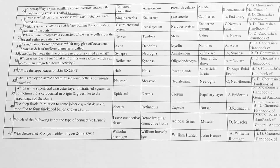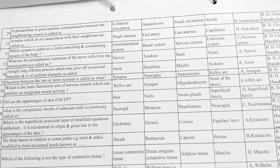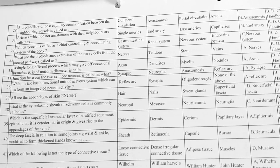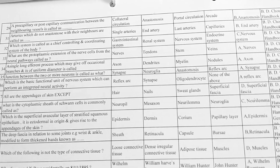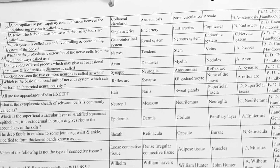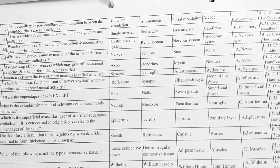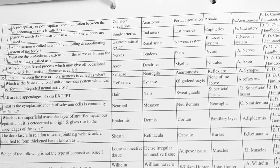Next, arteries which do not anastomose with their neighbors are called — options: A. single arteries, B. end arteries, C. last arteries, D. capillaries. Option B is correct, end arteries.